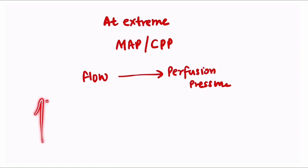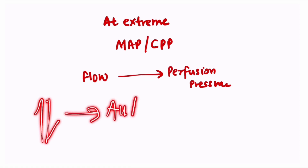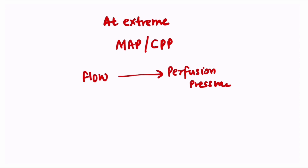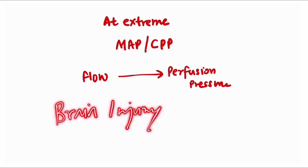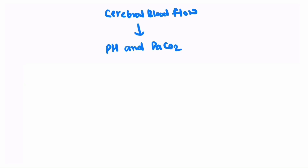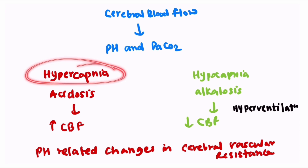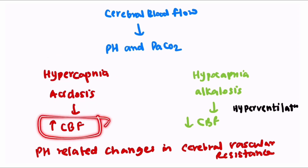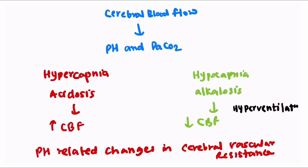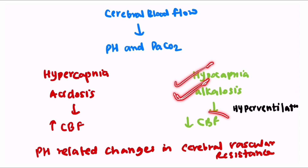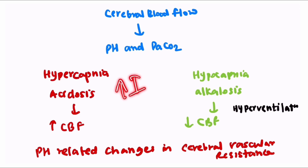At very high or very low blood pressure, this autoregulation mechanism fails, which can lead to brain injury in the form of hypoperfusion or hyperperfusion. Other factors that determine cerebral blood flow are pH and PaCO2. Hypercapnia or acidosis increases cerebral blood flow, while hypocapnia or alkalosis decreases it. This is exactly what happens when a patient hyperventilates — there is hypocapnia and alkalosis, causing decreased cerebral blood flow — which is why we prefer to hyperventilate patients with increased intracranial tension. Both effects occur due to pH-related changes in cerebral vascular resistance.